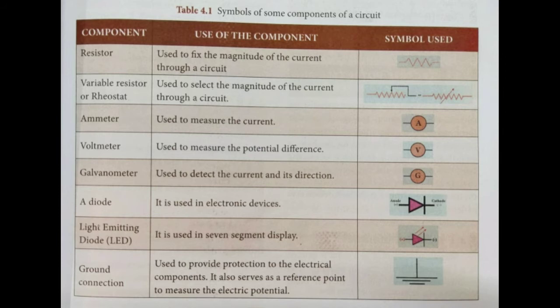The component resistor is used to fix the magnitude of the current through a circuit. The variable resistor or rheostat is used to select the magnitude of the current through a circuit. The ammeter is used to measure the current, shown as a circle with an A. The voltmeter is used to measure the potential difference, symbol V. The galvanometer is used to detect the current and its direction, symbol G. A diode is used in electronic devices, shown as a triangle with anode and cathode. The light emitting diode, LED, is used in 7-segment display. The ground connection is used to provide protection to the electrical components and also serves as a reference point to measure the electric potential.